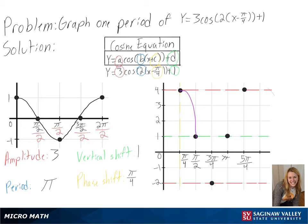And with that, we have graphed one period of y equals 3 cosine of 2 times x minus pi over 4 plus 1.